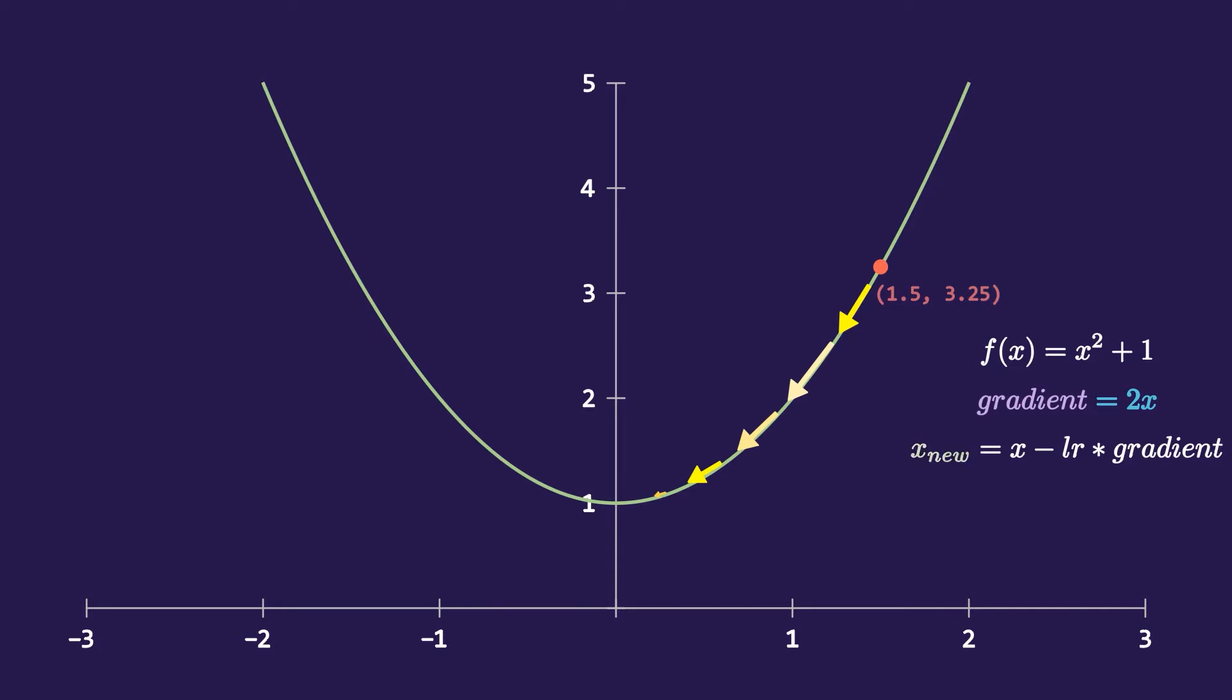We can find the new value of x by subtracting the x with the learning rate into gradient. And this new value of x is the minimized version of the previous x. We will discuss about learning rate in a moment. Now let us put the real values of our x in this equation and calculate the x new.